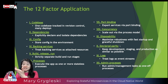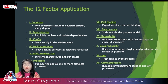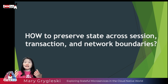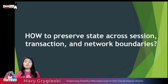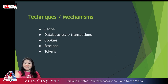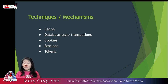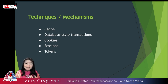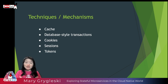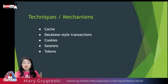Disposability — fast startup and graceful shutdown — these are also agility principles. So cloud native is essentially about very efficient processing with small footprints using microservices. Then how do we preserve state across sessions, transactions, and network boundaries? The techniques look familiar: caching, database-style transactions, two-phase commit still in use, cookies, sessions, tokens — all being expanded in today's world. We have Redis or Couchbase for caching, and cookies, sessions, and JWT tokens are all in use.